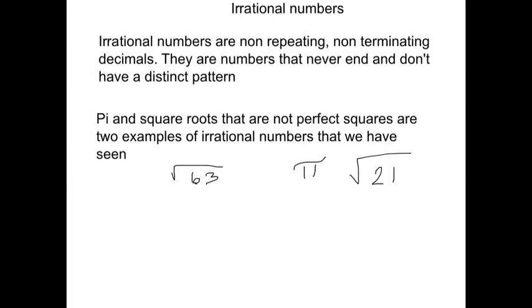A reminder is that irrational numbers are any non-repeating, non-terminating decimal. They're anything that can't be written as a fraction where the numerator and denominator are both integers. Basically, they're numbers that never end and have no distinct pattern.